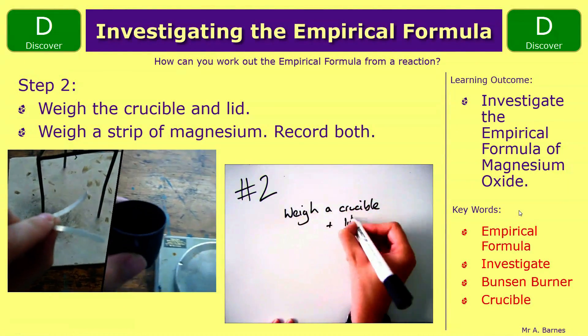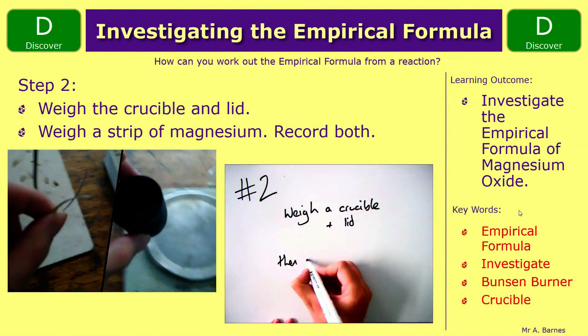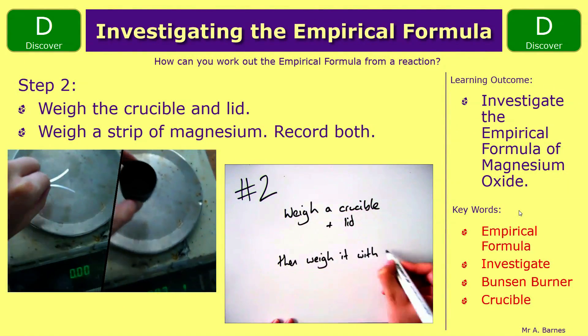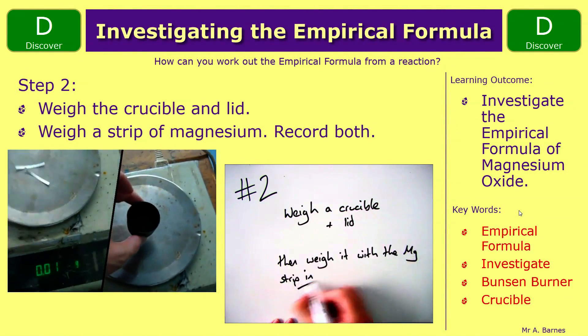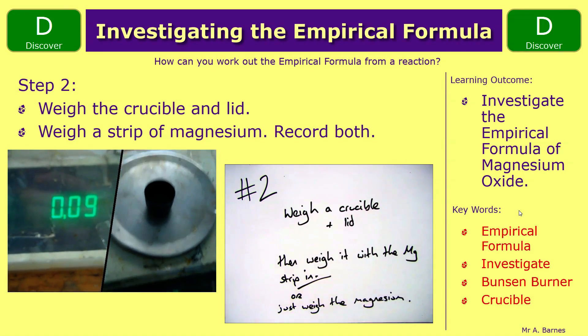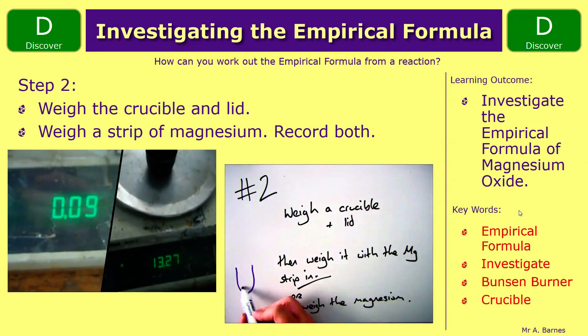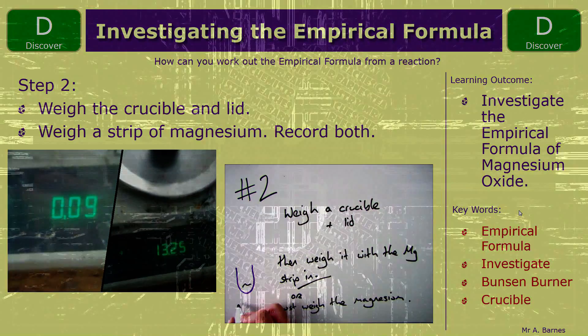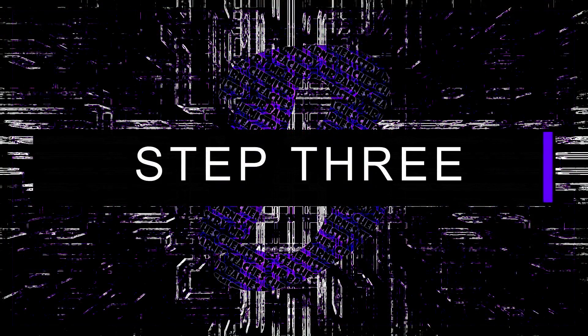The second step is you need to weigh a crucible and lid, put it to one side, and then weigh your strips of magnesium and record the mass of both of them.